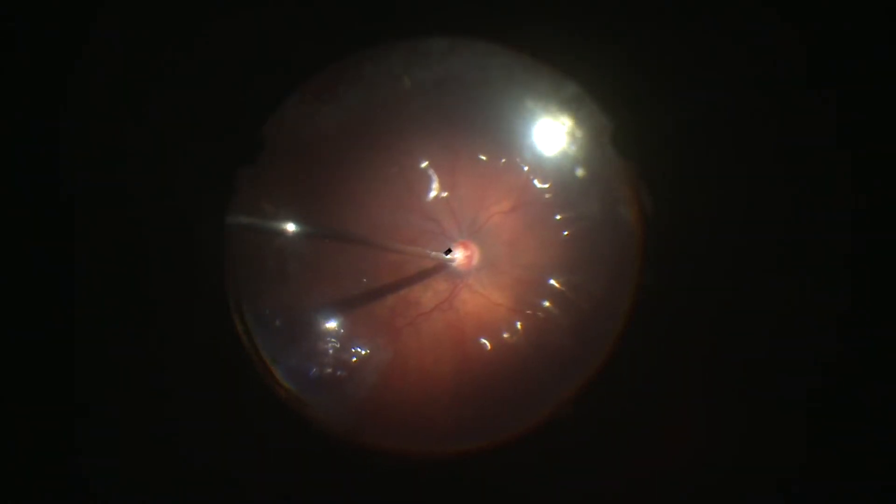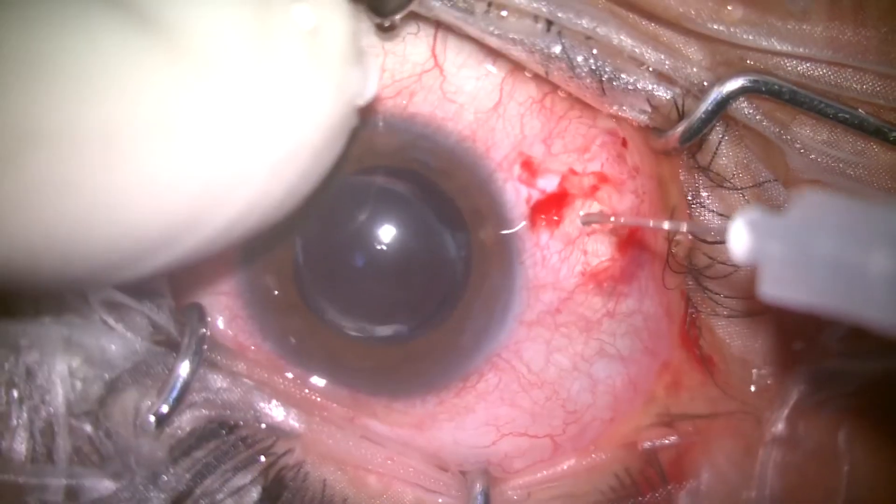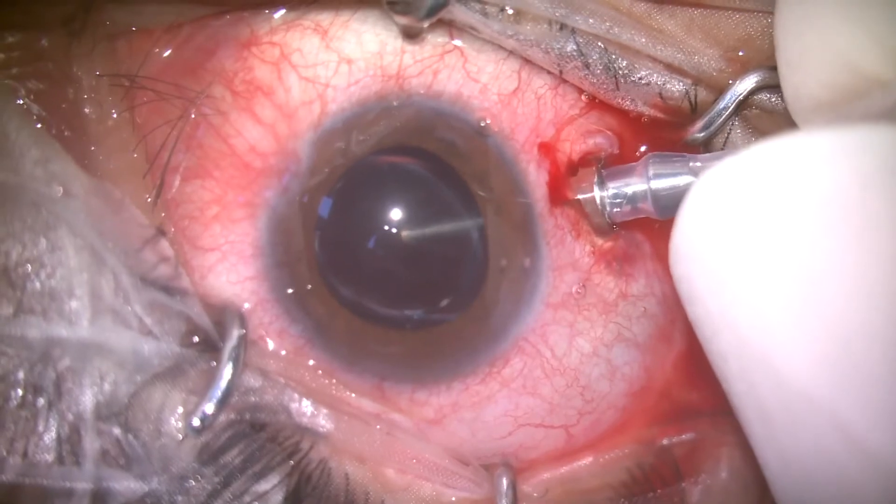Many cases of GRT present with hypotony and choroidal detachment. It's a good idea to inject saline to make the globe taut before entering the vitreous cavity with a 6mm cannula. This case presented with a very large tear extending radially to the disc with a large gap between the leaflets.